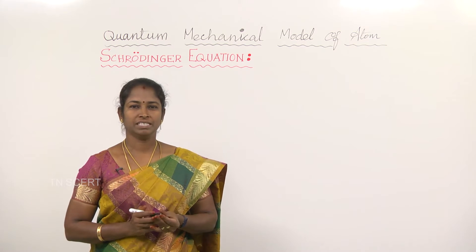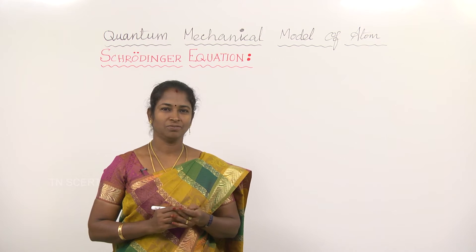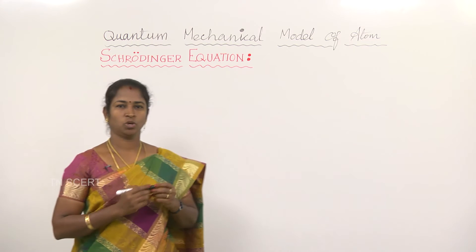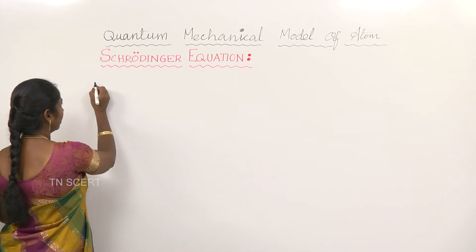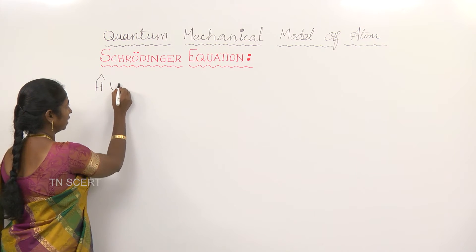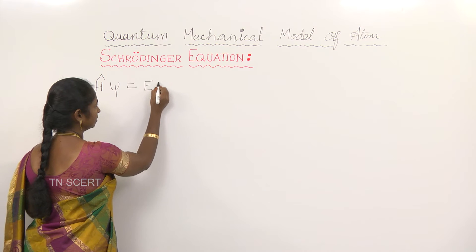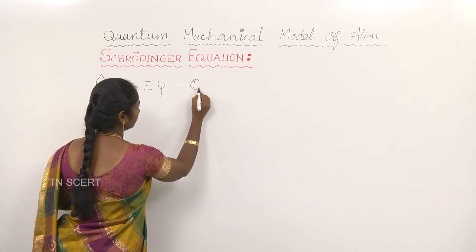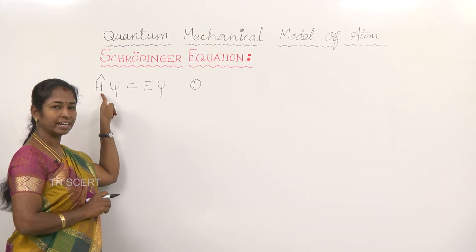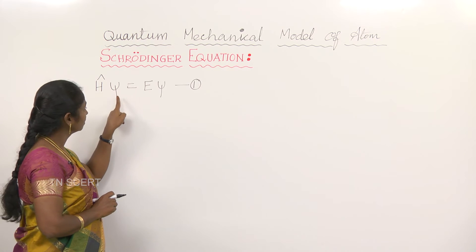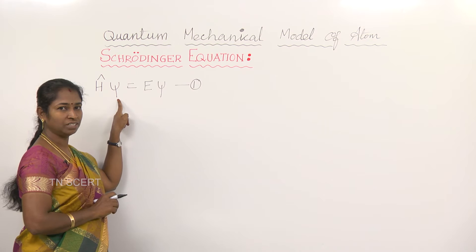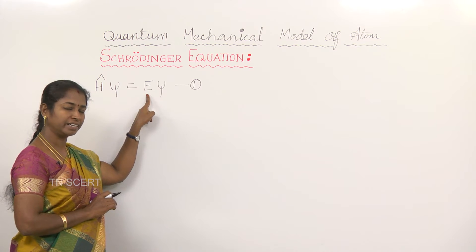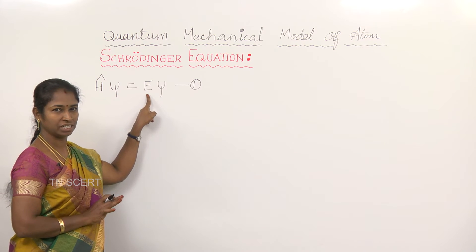Erwin Schrödinger expressed the wave nature of the electron in terms of a differential equation. The time-independent Schrödinger Equation can be written as H-cap ψ equal to Eψ. Here, H is called the Hamiltonian operator, ψ is the wave function, and E is the total energy of the system — that is, kinetic energy as well as potential energy of the system.